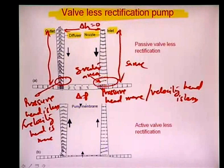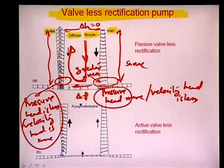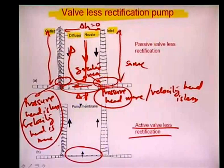The differential pressure ΔP between these sides causes fluid to move from the high-pressure zone to the low-pressure zone across the micro channel. Additionally, there can be active valveless rectification systems where the micro channel area can be further changed using a peristalsis effect.